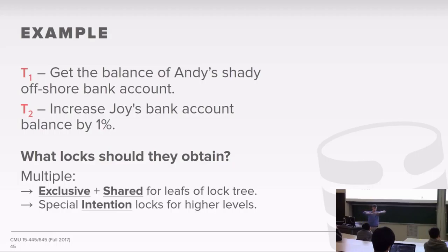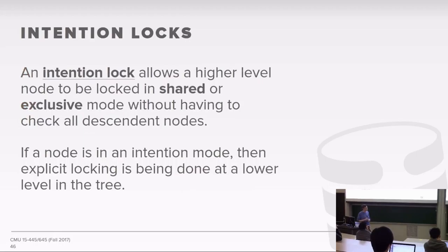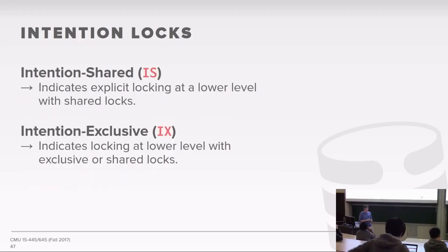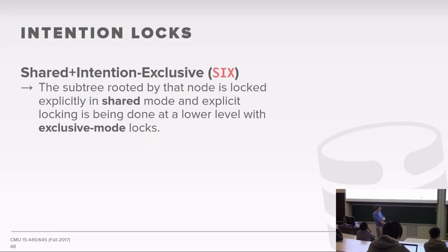The first example we shared before was two transactions. The first wants to get the balance of my bank account; the second wants to increase the balance of Joy's bank account. We introduced a new class of locks called intention locks that allow us to provide hints to other transactions running in our database system at the same time. The three classes of intention locks are: intention shared, intention exclusive, and shared intention exclusive.